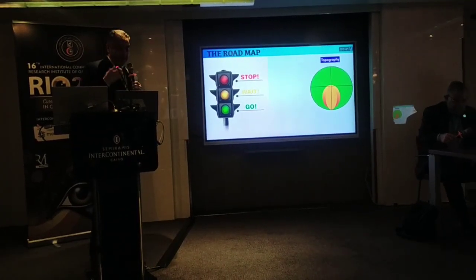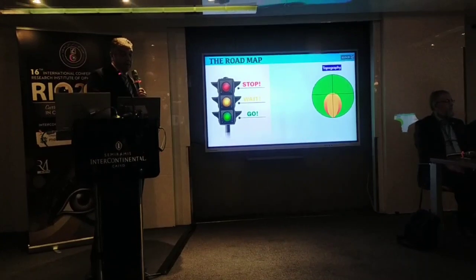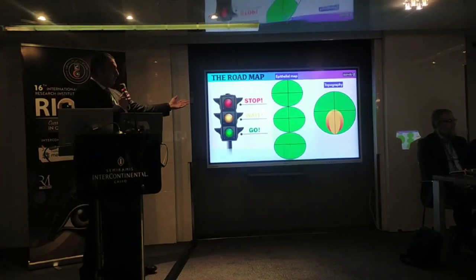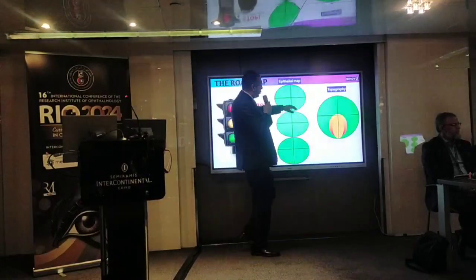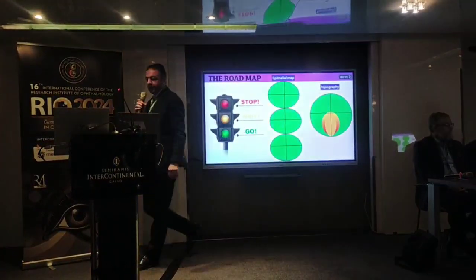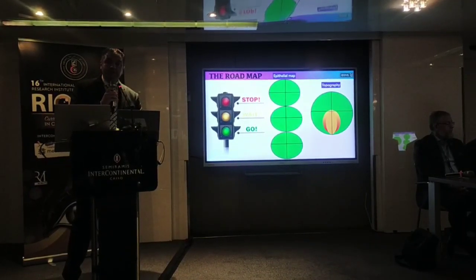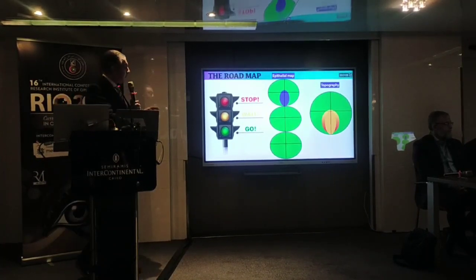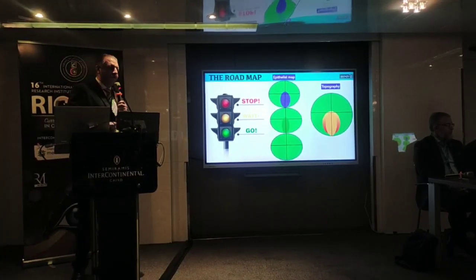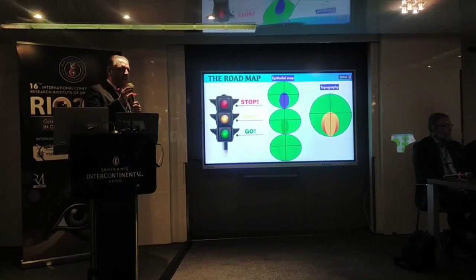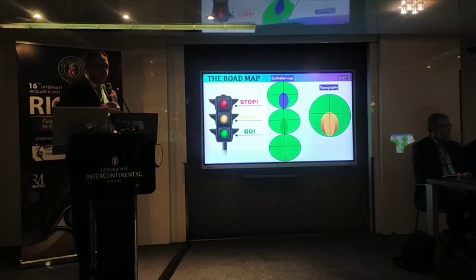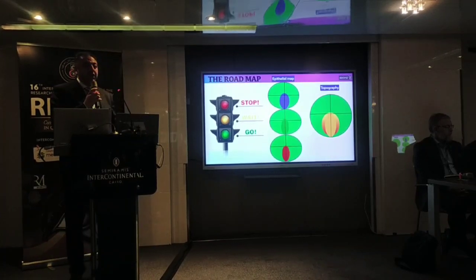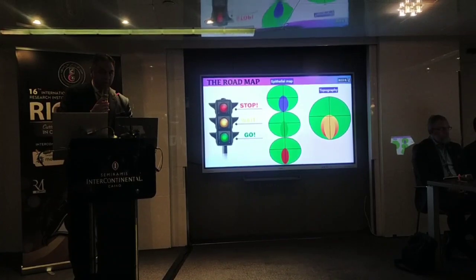The roadmap for all of us regarding epithelial mapping is: stop, wait, or go. Simply, if you have topography with steepening, you study the epithelial mapping to know whether this is significant steepening or just a surface change or hyperplasia of the epithelium. If it's blue — thinning — you have to stop. If it's green but with no significant differences between this point and the surrounding points, you have to wait and follow up. But if you have thickening, which is the red sign, you can go comfortably with no problem at all.